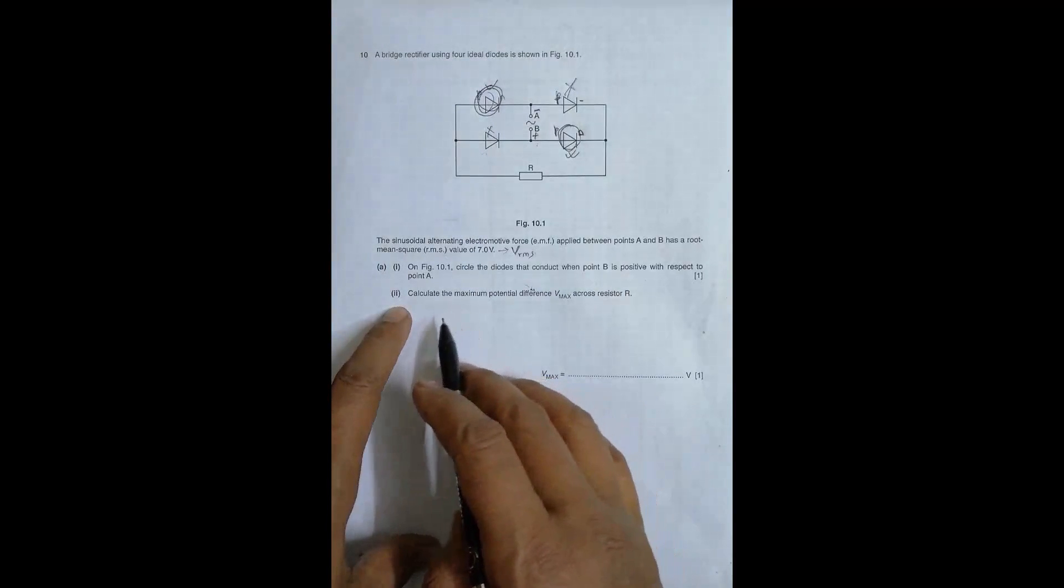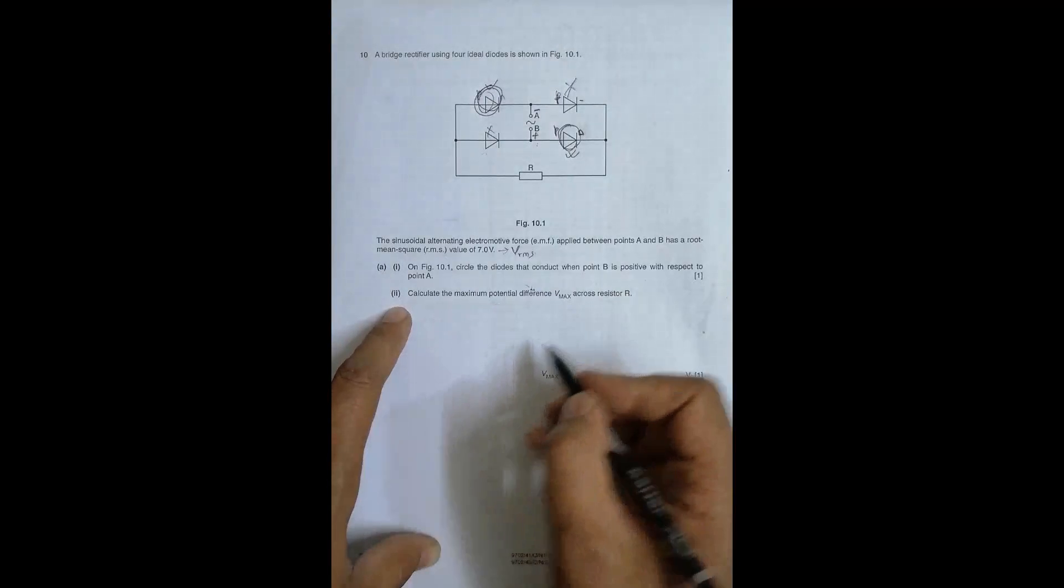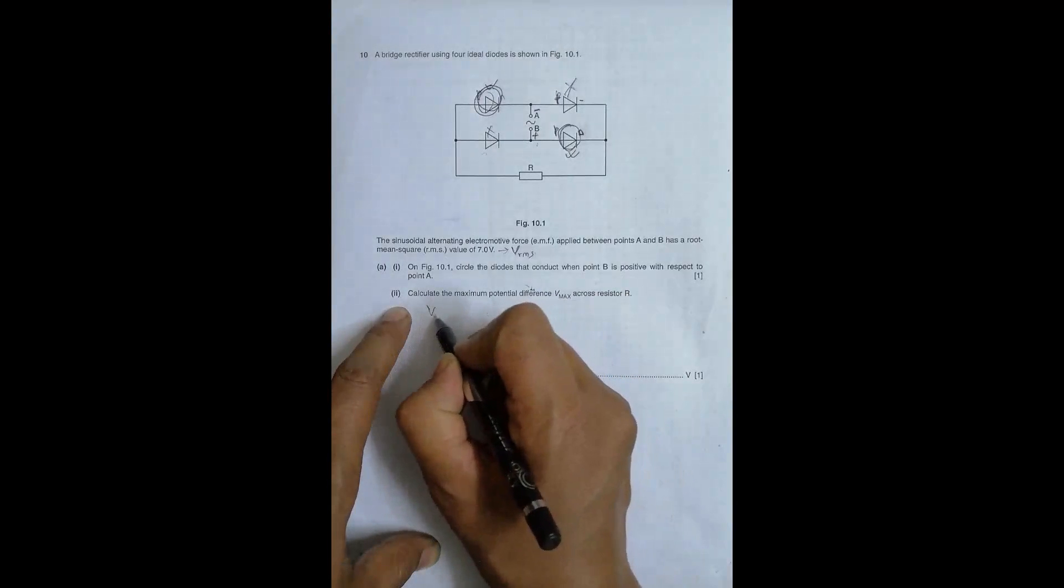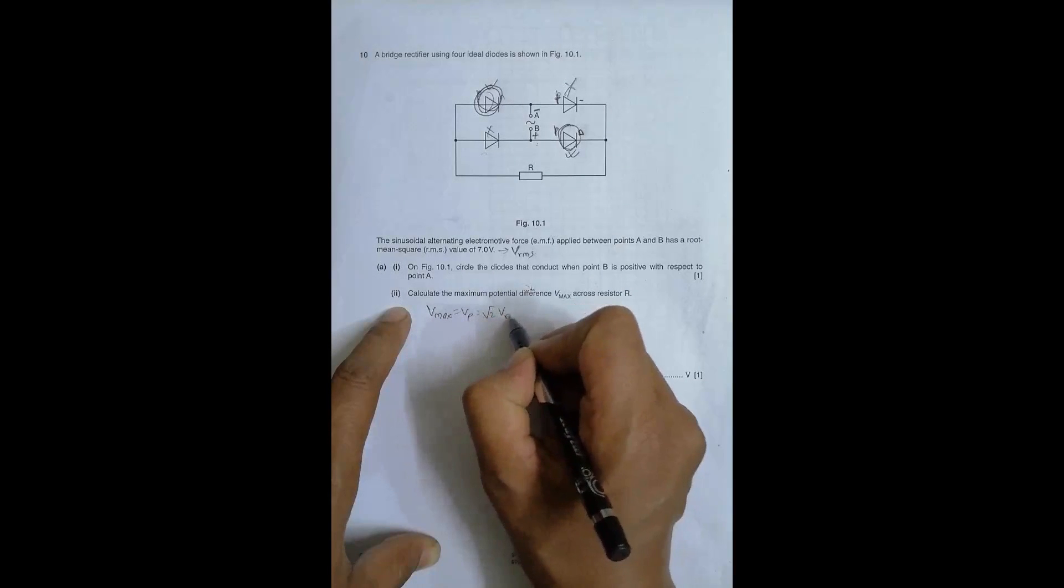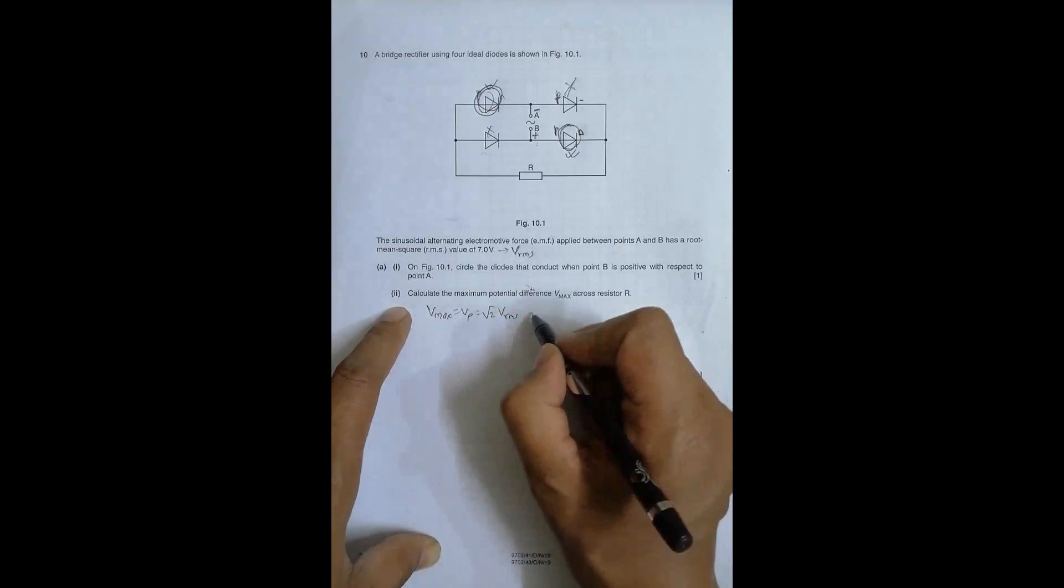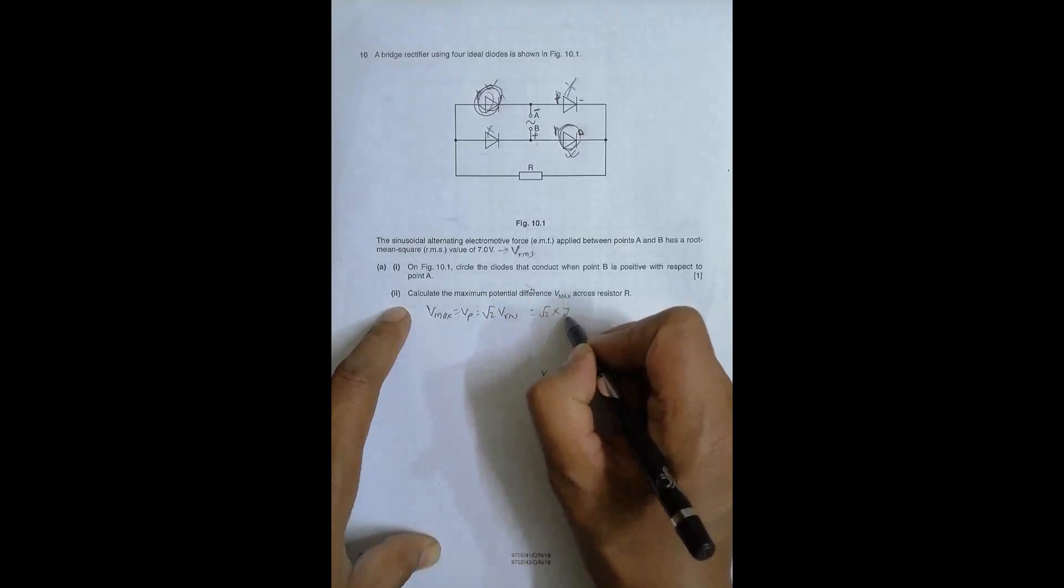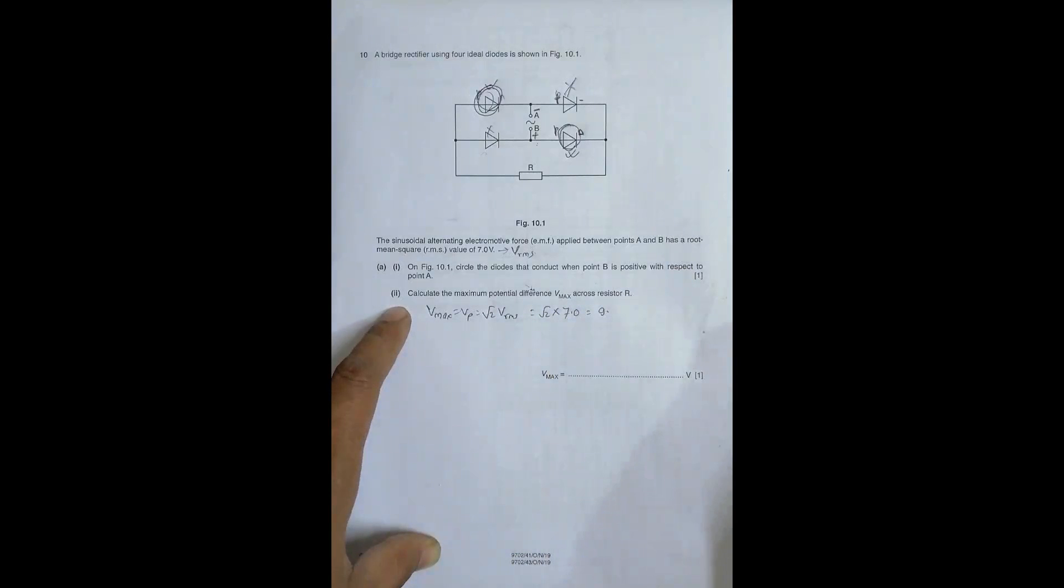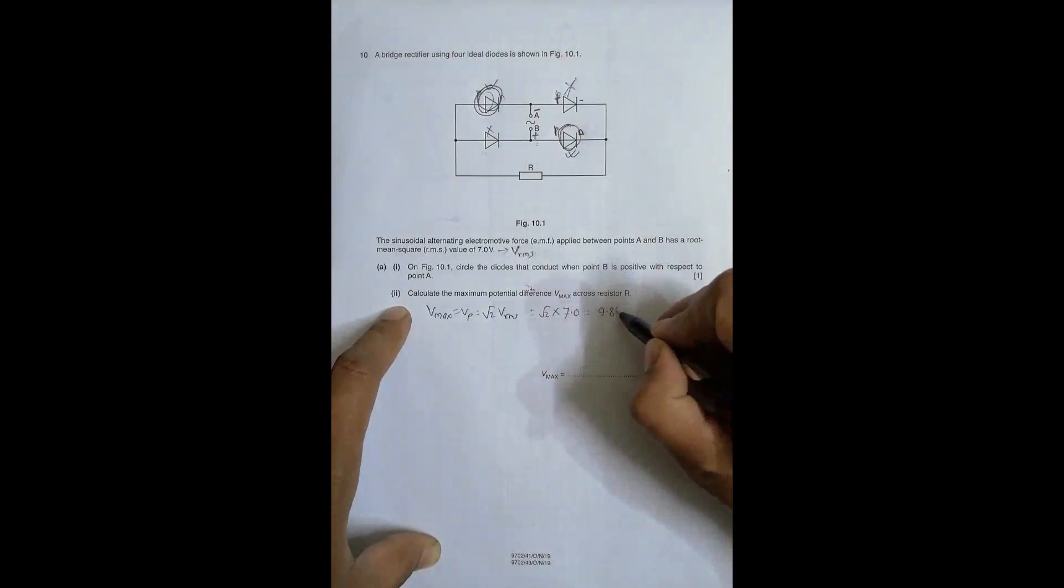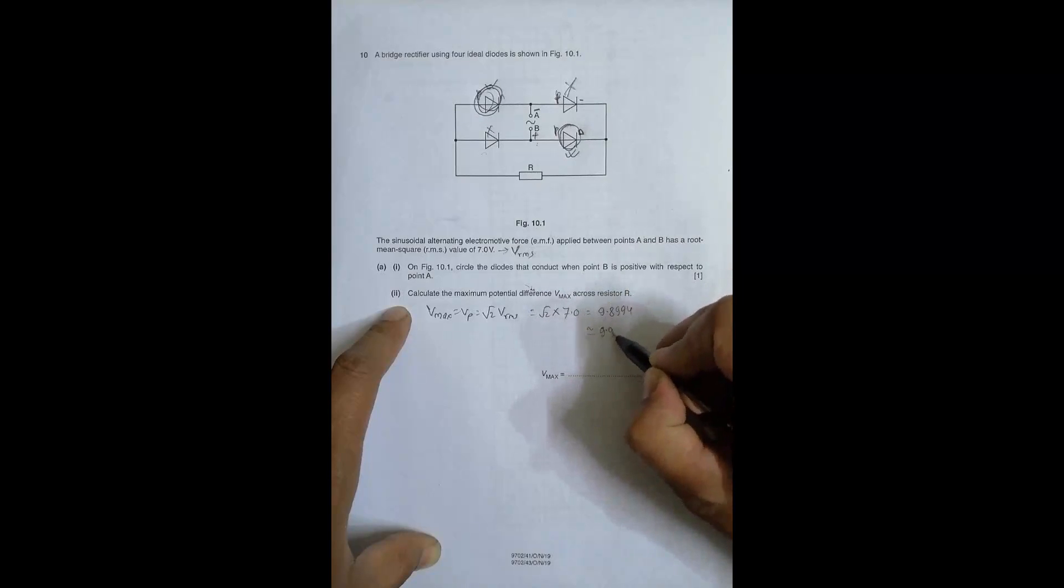So number two. Calculate the maximum potential difference Vmax across resistor R. So Vmax is equal to Vpeak, and that's equal to root 2 into VRMS. So it's root 2 into VRMS is 7.0, so it comes to equal to 9.2. So root 2 power 0.5 into 7.0, so 9.899. So this is nearly equal to 9.9 volts.